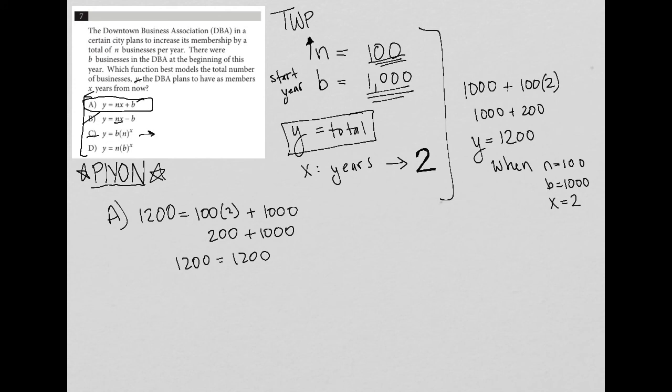So again, b is 1000, parentheses 100 to the second power, that is definitely not going to equal 1200. So that's out. And then lastly, we have 100 times 1000 to the second power, so even larger. So that's also definitely not 1200. So choice a is the best answer, is the correct answer here.